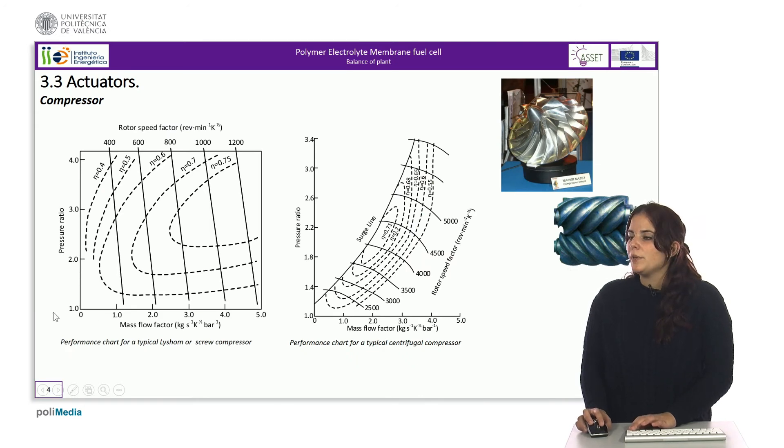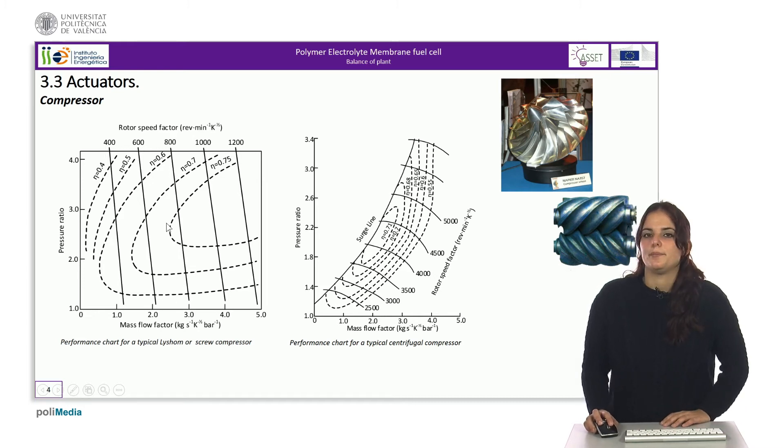If the compressor is a screw or Leeson type, as shown here in the first picture, the characteristic curve is the one here on the left. This compressor has no areas of instability.